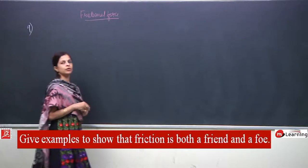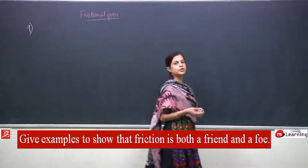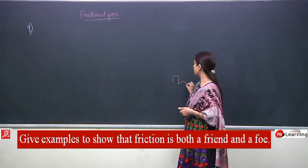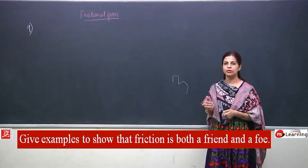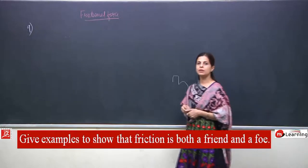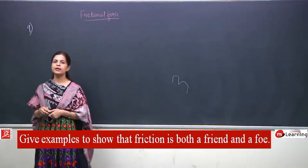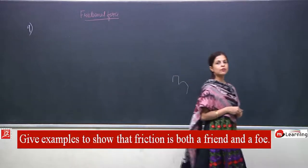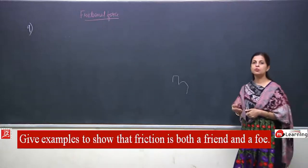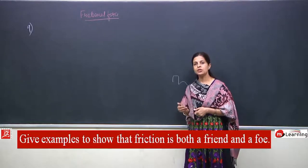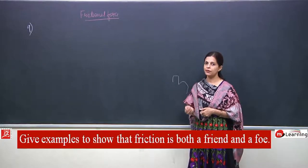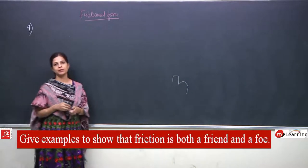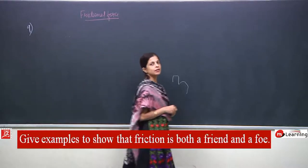When I am writing on the blackboard, I am able to write because of friction — because there is roughness between the two surfaces. The surface is not very smooth, so I am able to write. I won't be able to write on glass because the glass is smooth and friction is less. We can write with a pen because friction allows ink to transfer to the paper. These are all advantages of friction.